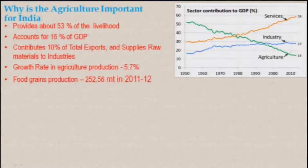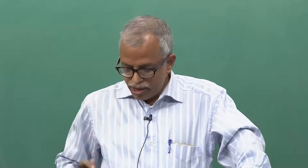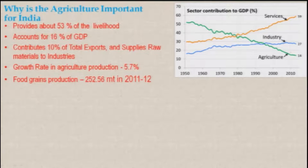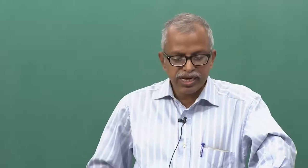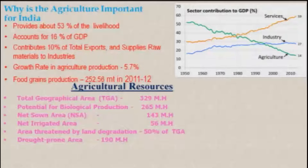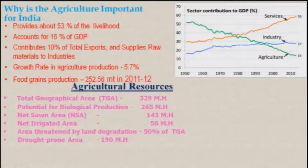The growth rate in agriculture production is 5.7 percent, and food grain production was about 252.56 million tons in 2011-12, which may have gone up. India's total geographical area is 3.9 mega hectares, potential for biological produce is 265 mega hectares, net sown area is 143 mega hectares, and net irrigated area is a small 56 mega hectares.